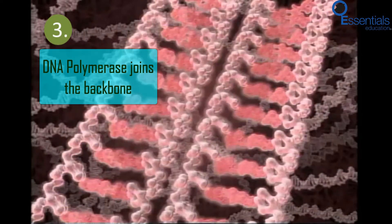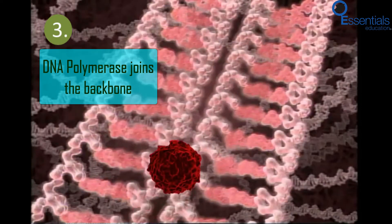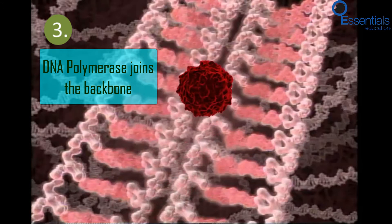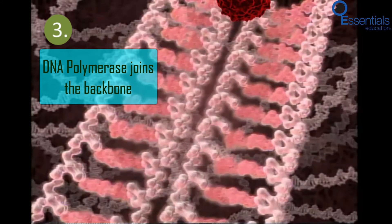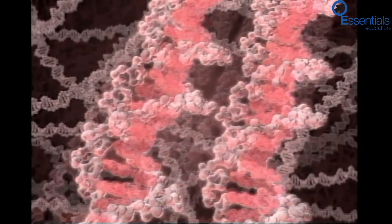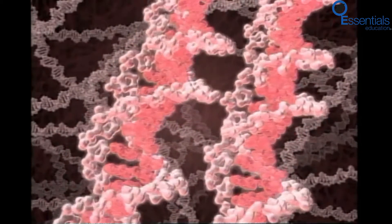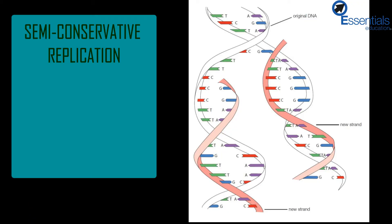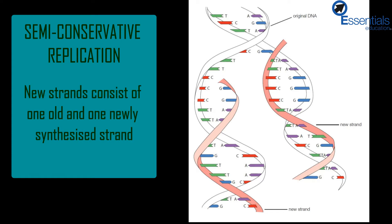Third, the enzyme DNA polymerase joins the bases together, resulting in the growth of two new strands. This process continues all the way along the whole length of the chromosome. This process is also called semi-conservative replication because each new strand consists of one old strand and one newly synthesised strand.